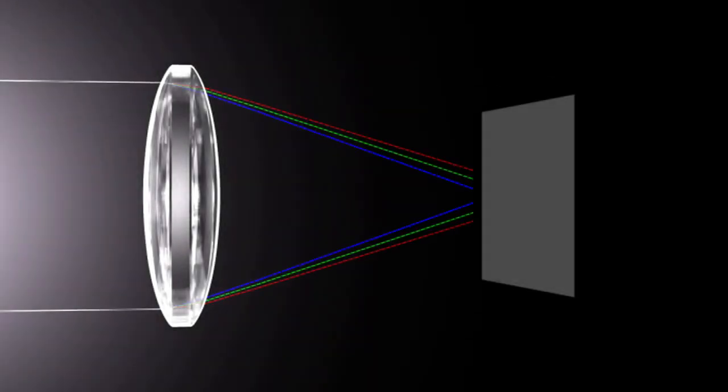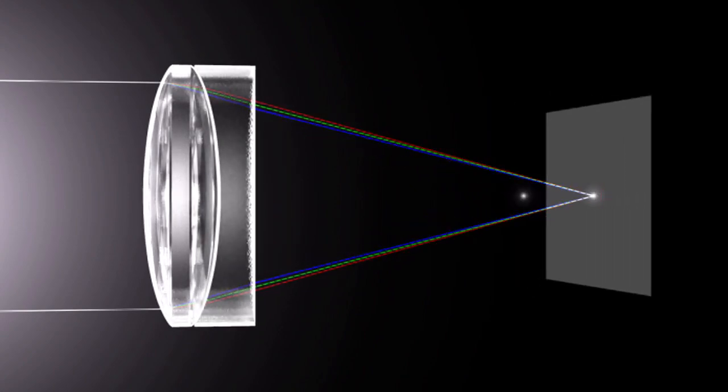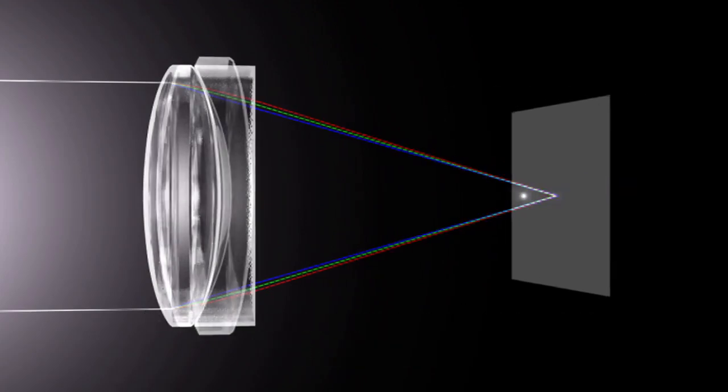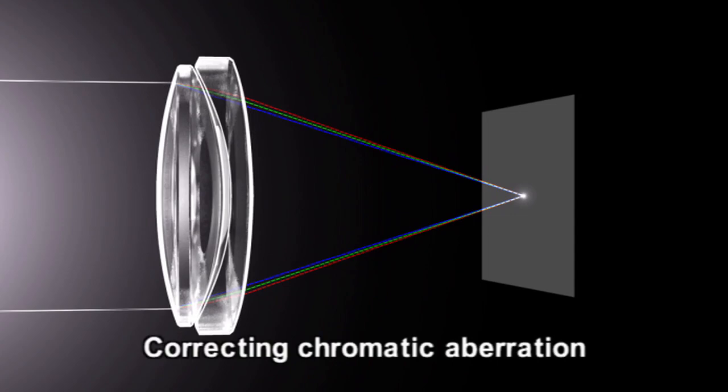Chromatic aberration can also be corrected by combining convex and concave lenses. Moreover, by joining lenses made of different materials, it is even possible to correct chromatic aberration without changing the position of the focal point.